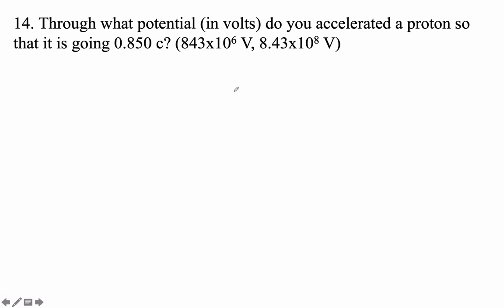The approach here is to take a proton and figure out what its dilated mass is when it's going that fast. If we do the mass in electron volts, then the difference in mass will be the voltage that we have to accelerate it through.